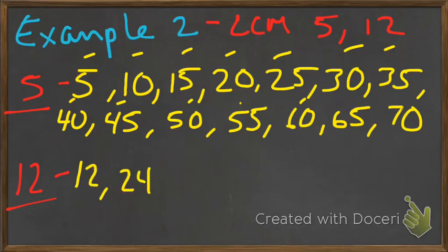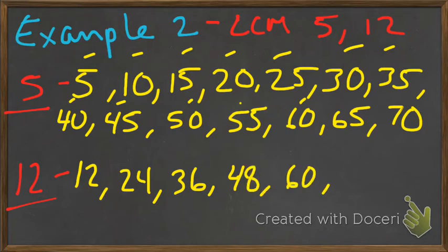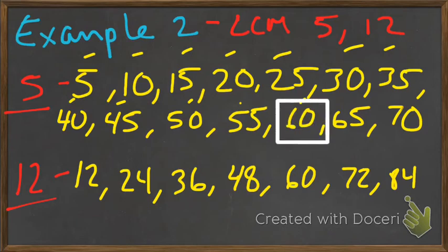Twelve, twenty-four, thirty-six, forty-eight, sixty, seventy-two, eighty-four. Do we have a common multiple here yet? Twelve, twenty-four, thirty-six, forty-eight, sixty. Five, ten, ooh, looks like we do. So I've got sixty here in five, and I've also got sixty in twelve.